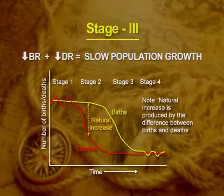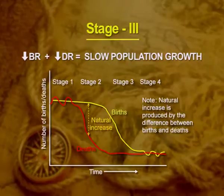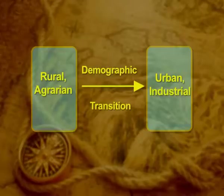Stage 3: the birth rate declined, and so did the death rate. Stage 4: family planning, increased literacy rate, industrialization, and increased per capita income were the reasons for this stage to occur. Across the world, we witness differences in development and therefore differences in the stages of demographic transition. The shift from a rural and agrarian society to the urban world is an indicator of population growth, as explained in this diagram.